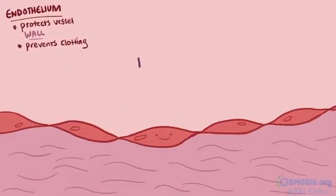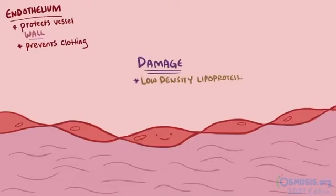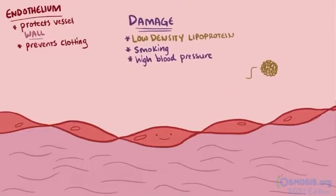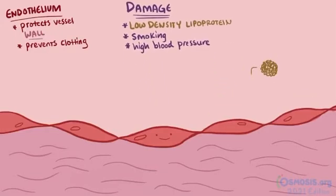Your endothelium can become damaged in a lot of ways. Low density lipoproteins, chemicals from smoking cigarettes, and high blood pressure all wreak havoc on the endothelium, because these irritants break down the endothelium.